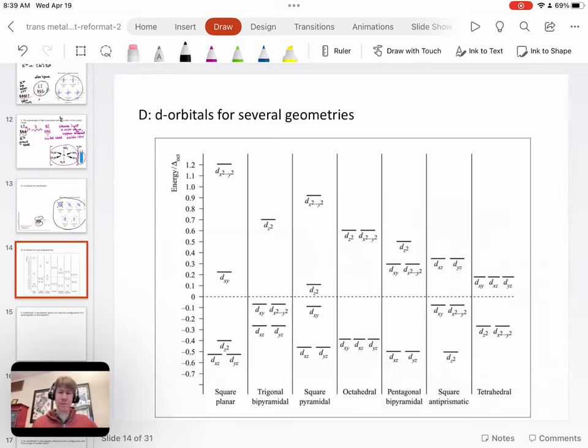Here's the d orbitals for several geometries, including octahedral, which we've already talked about, tetrahedral, which we've talked about as well, square planar with its one very high d orbital in energy. And the other one we have to worry about is not on here. It's linear.